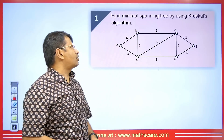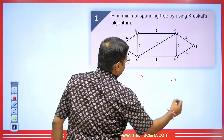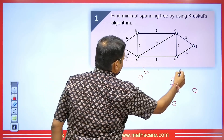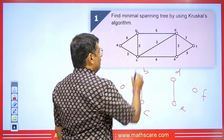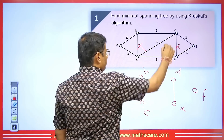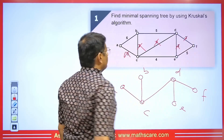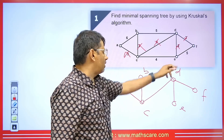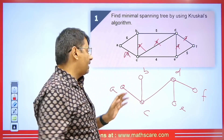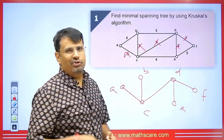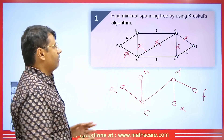Now let's find the minimal spanning tree using Kruskal's algorithm for a new graph. We indicate all vertices: A, B, C, D, E, and F. The minimum weight is 2 — we connect both edges of weight 2. Next, we connect edges of weight 3. We connect one weight-3 edge, then another weight-3 edge. If we try to connect another 3, it would form a closed circuit — not possible. We have 6 vertices, so we need 5 edges: 1, 2, 3, 4, 5. This gives us the minimal spanning tree.